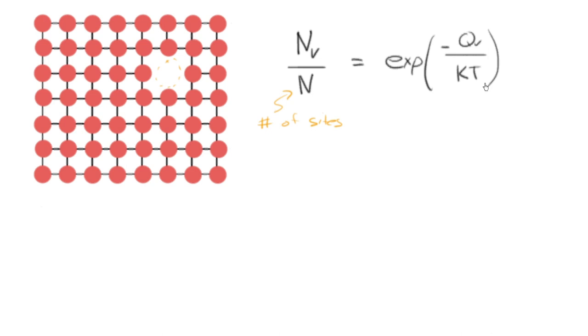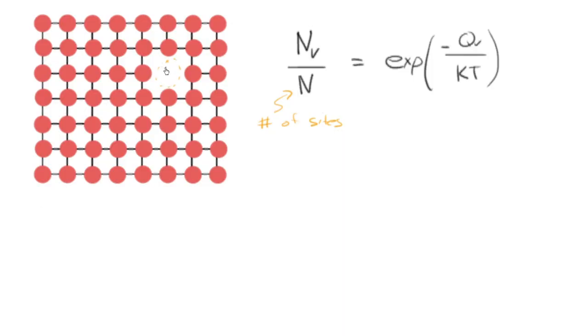So you might wonder where that comes from. In fact, you may even wonder, just intuitively, well how can it be that an atom can jump out of its lattice site? And if the temperature was such that it jumped out of a lattice site, why would all the atoms not jump out of their lattice sites and you have a liquid?